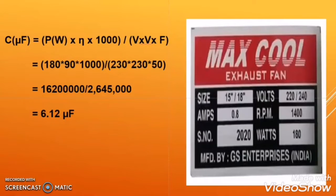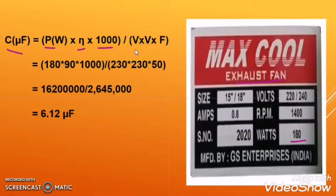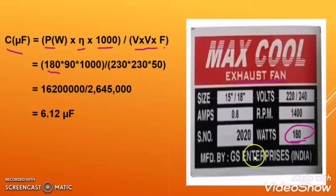Let us calculate the capacitor size for a particular motor. Here there is an exhaust fan, which is a single phase induction motor rated at 180 watts. Using the formula C = P × efficiency × 1000 ÷ (V² × f), we know P is 180 watts. For efficiency, you can take 100% or 90% since it is not mentioned on the motor — generally efficiency lies between 85% and 100%, so I will use 90%.